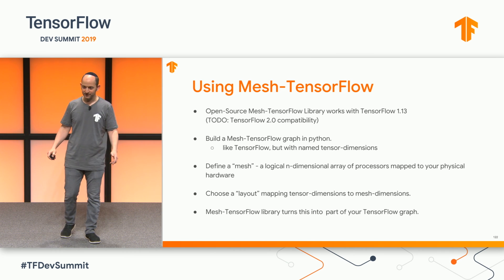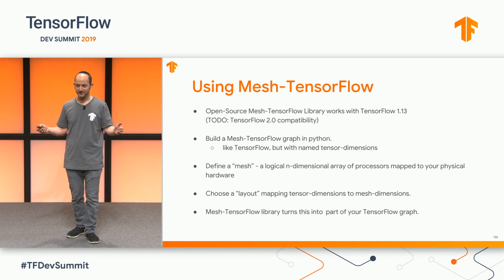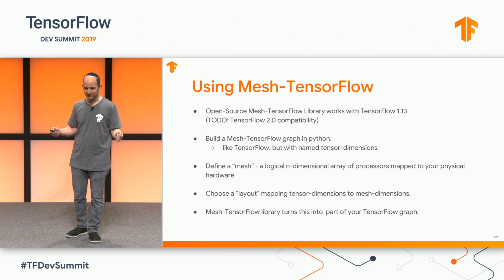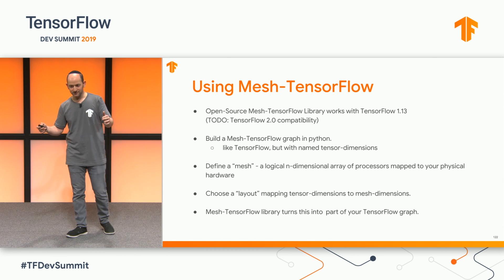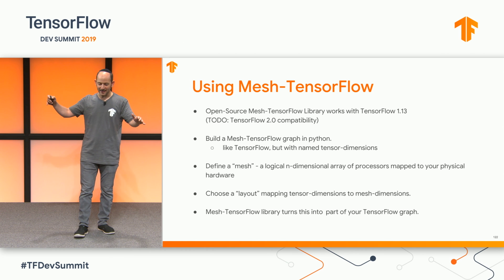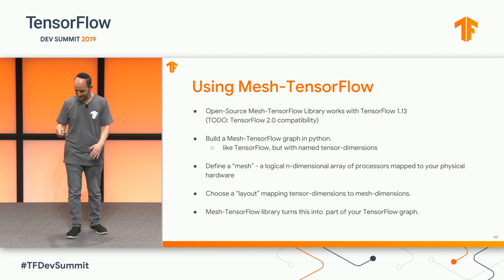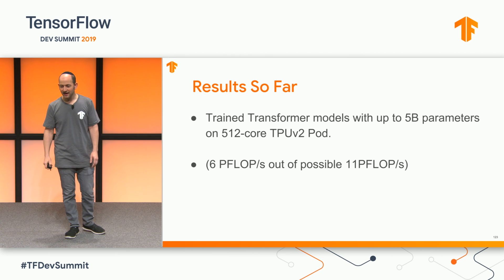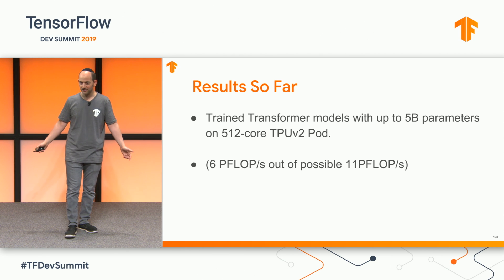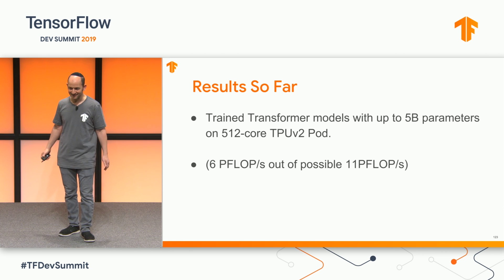So how do you use Mesh TensorFlow? Download our open-source repository. You build a graph in Python much like a regular TensorFlow graph, except you're using named dimensions. You define what your mesh is and how it maps to your physical processors, define your layout of what gets split across what, and then Mesh TensorFlow turns your Mesh TensorFlow graph into part of a TensorFlow graph. You still use TensorFlow for anything else, like data pipelines. So far we've trained transformer models with up to five billion parameters on entire TPU pods, getting good performance.